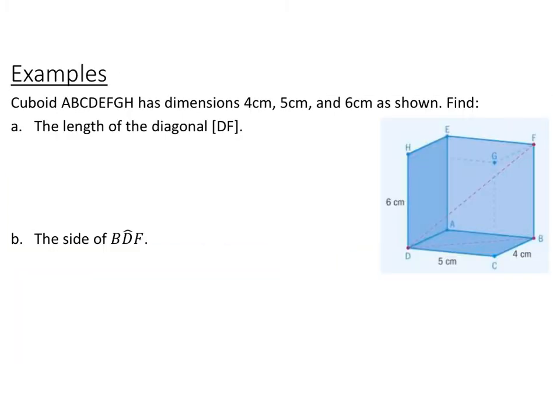We have a cuboid ABCDEFGH with dimensions 4, 5, and 6 centimeters, and we want to find the diagonal DF. D and F are on diagonals from each other. Go ahead and pause the video and see if you can find that diagonal DF.